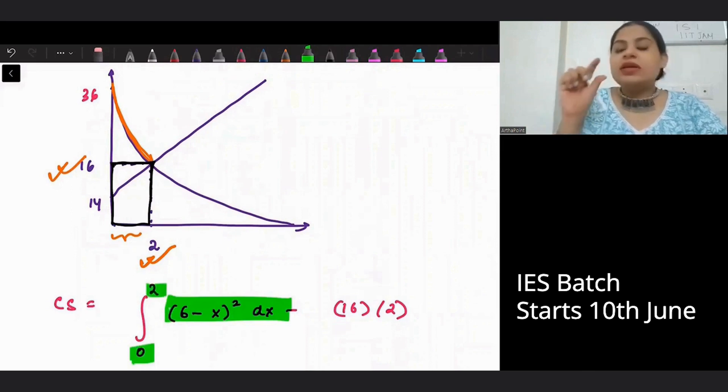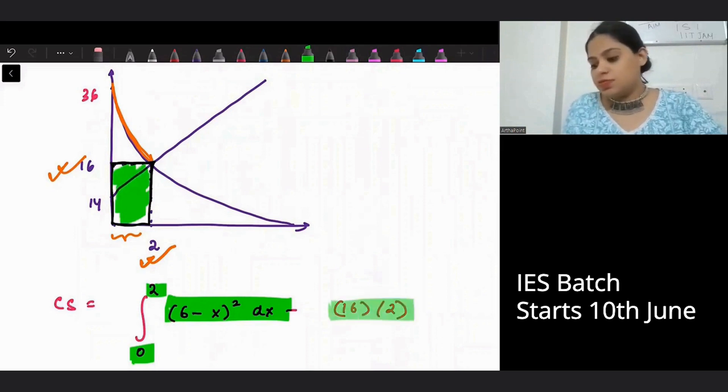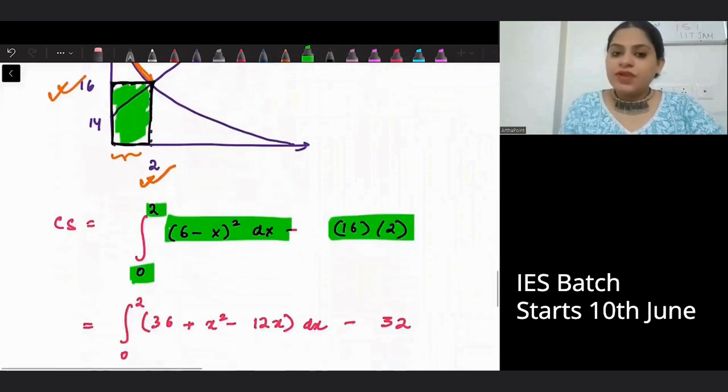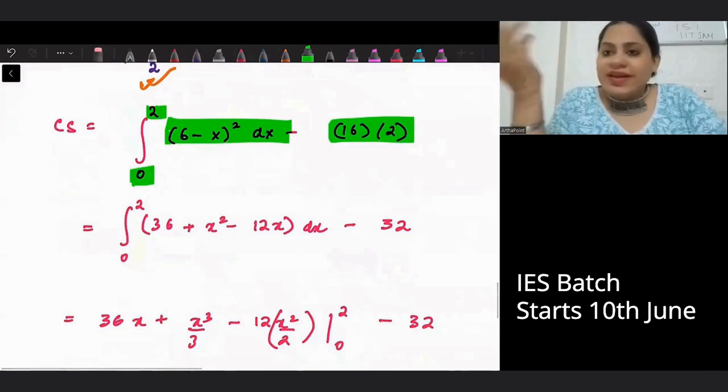So what will we do? We will integrate the demand curve from 0 to 2. And we will subtract the area of the rectangle. That means 16 into 2.